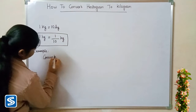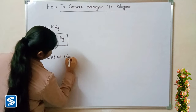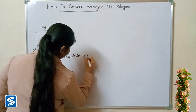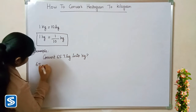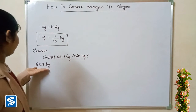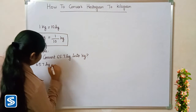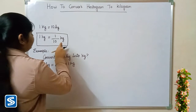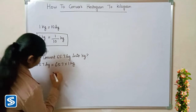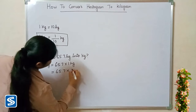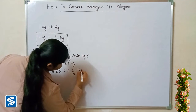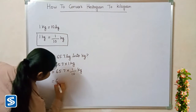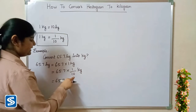Next example: convert 65.7 hectograms into kilograms. 65.7 hectograms can be written as 65.7 multiplied by 1 hectogram. We substitute 1/10 kilograms in the place of 1 hectogram, so 65.7 multiplied by 1/10 kilograms. 65.7 multiplied by 1 will be 65.7, so we get 65.7 divided by 10 kilograms.